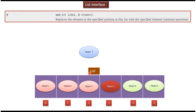Suppose from this list I want to replace Object 3 with Object 7. Then I have to use the set() method. Here I have to pass the index — since Object 3's index is 2, I pass 2 — and the element as Object 7. Then Object 3 will be replaced with Object 7.